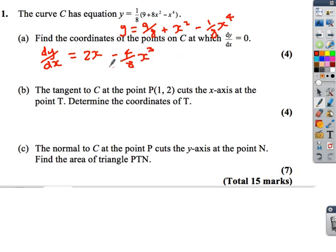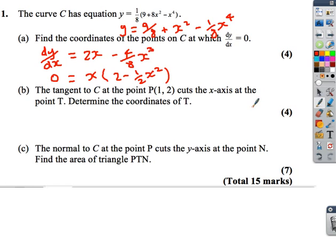When the gradient is equal to 0, if we factorise 2x out of this equation, we can get basically x out of that, and then we're going to end up with 2 minus half x squared. So these are the points where the gradient equals 0. This gives us one possibility: x equals 0, or 2 equals half x squared.